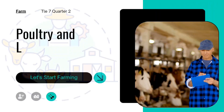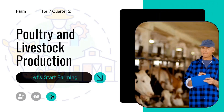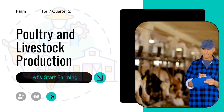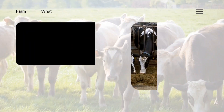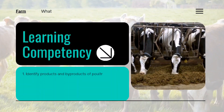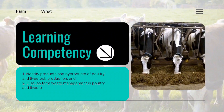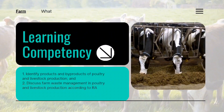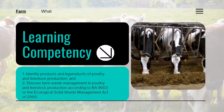Poultry and Livestock Production, TLE 7, Quarter 2, Week 8, Lesson 10. The learning competencies are: 1. Identify products and byproducts of poultry and livestock production. 2. Discuss farm waste management in poultry and livestock production according to R.A. 9003, or the Ecological Solid Waste Management Act of 2000.